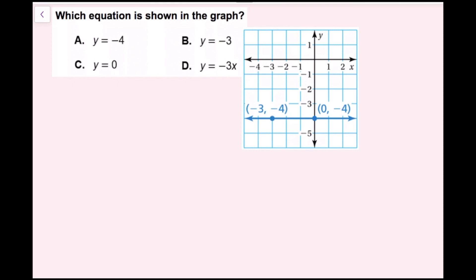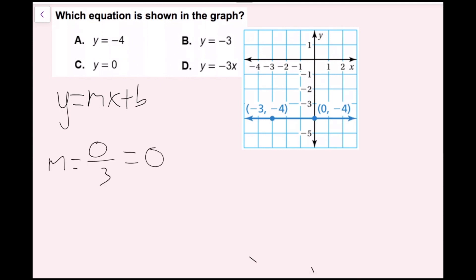For this example, we need to figure out the equation of this line. I'm going to find the slope and the y-intercept. We have y equals mx plus b. I see that this is a horizontal line, so there is no rise, but there is a run. My rise from this point to this point is zero, and my run is three. So my slope m is going to be zero over three, which equals zero. The slope of every horizontal line is zero.